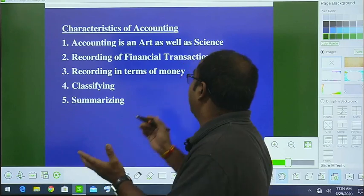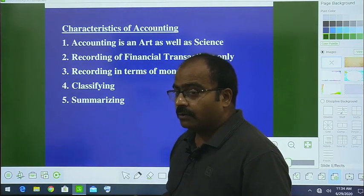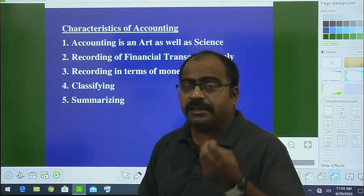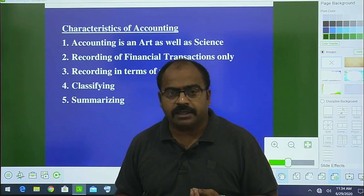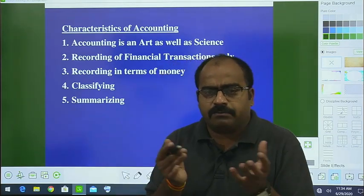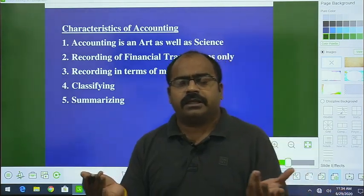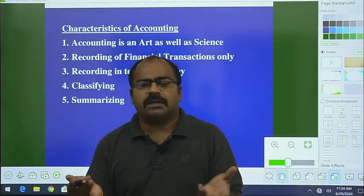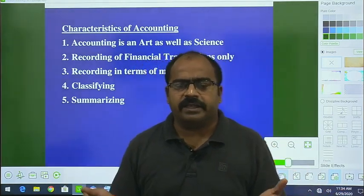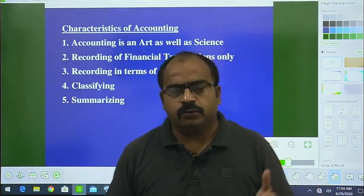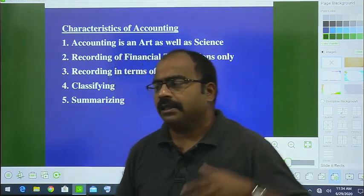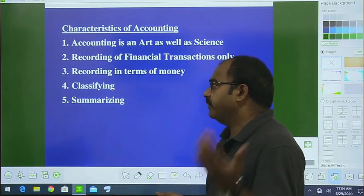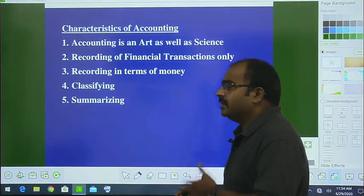Now, when does a subject become a science? A subject becomes science when it has rules, regulations, principles, concepts, and conventions. So accounting has all of these. It has a basic framework of rules and conventions.